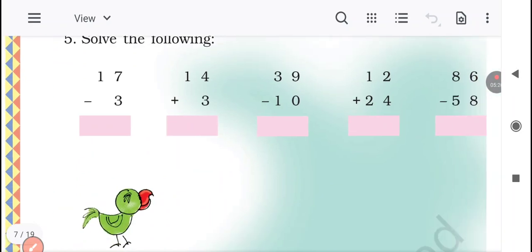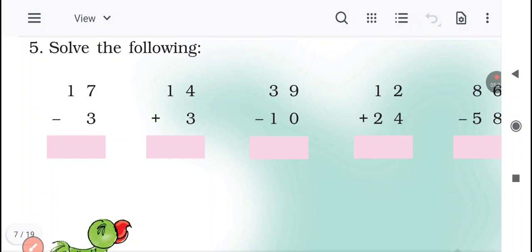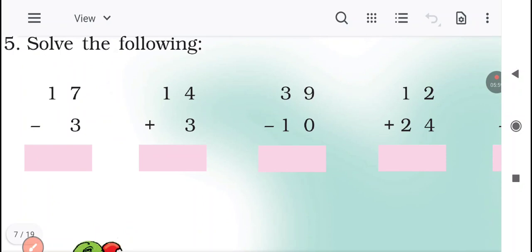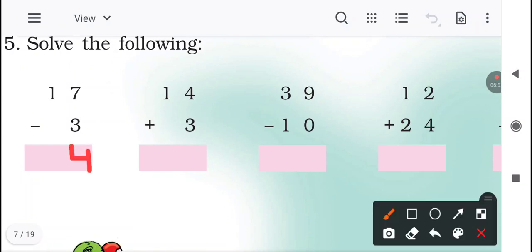Solve the following. So here mixed sums are there. Minus ka hai, plus ka hai - is cheez ka aapko bahut dhyan rakhna padega. Because if you don't see the sign, it will become a problem. So we have to be very careful about the sign. Jo sign diya hua hai, accordingly we have to solve the sums. So in the first question, minus is there, so we need to subtract. 17 minus 3. 7 minus 3 is equal to 4. We will write here 4 and 1. 1 ke neeche to kuch bhi nahi hai. So 7 minus 3 is equal to 4, and 1 we will write as it is.